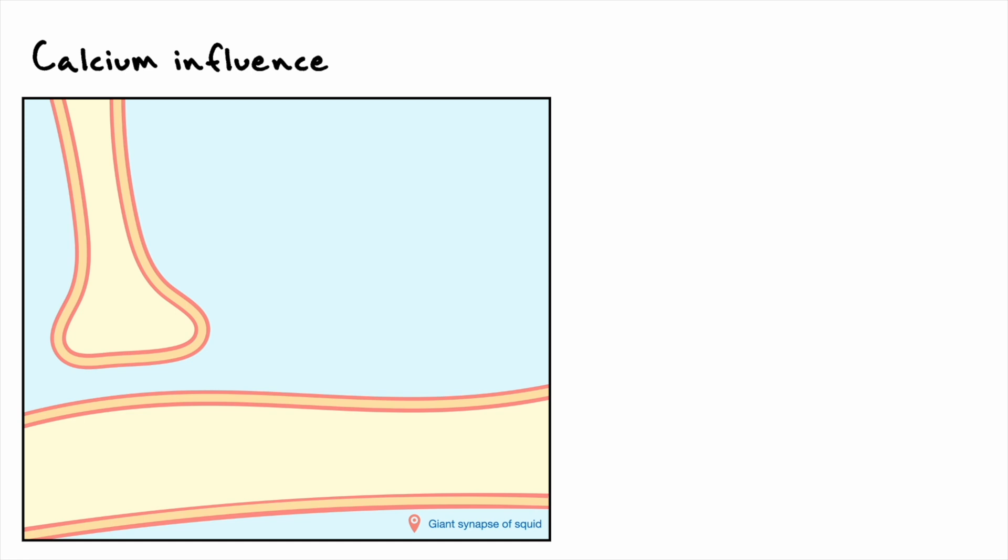Two electrodes are inserted in the pre-synaptic cell, one for stimulation and one for voltage recording. A third electrode is inserted in the post-synaptic cell to record the voltage there. The third electrode is very important because it provides a way for the experimenter to know if the signal was transmitted or not.